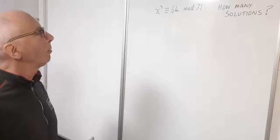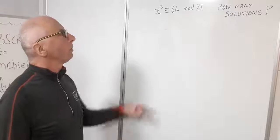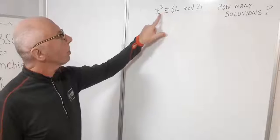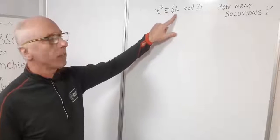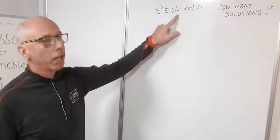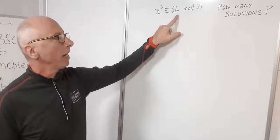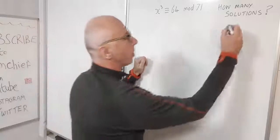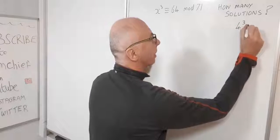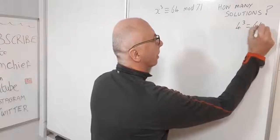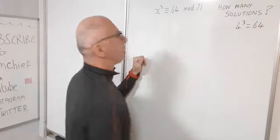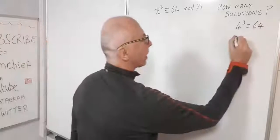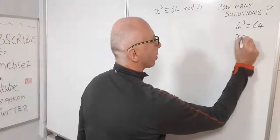Where do we start? Well, first of all, I can see x cubed and 64 — there's a relationship there already. We know that 4 cubed is 64. So let's start with that fact: 4 cubed is 64, meaning x equals 4 is one solution.